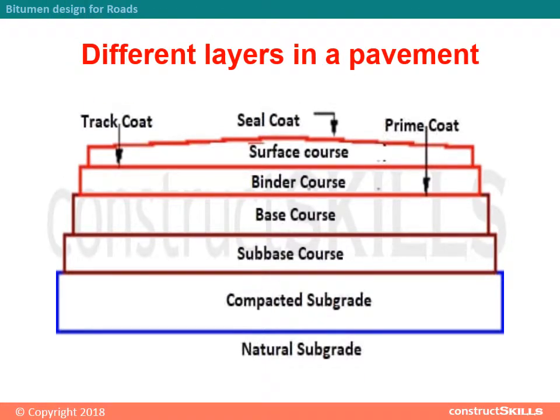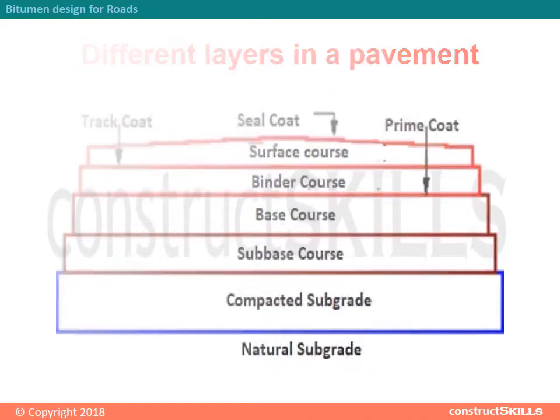Different layers in a pavement are shown here: natural subgrade, compacted subgrade, sub-base course, base course, binder course, and surface course, respectively. These form the structural layers of bituminous roads.